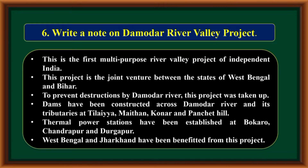Dams have been constructed across the Damodar River and its tributaries at Tillaiya, Maitan, Connor, and Panchet Hill. Thermal power stations have been established at Bokaro, Chandrapur, and Durgapur. West Bengal and Jharkhand have been benefited from this project.